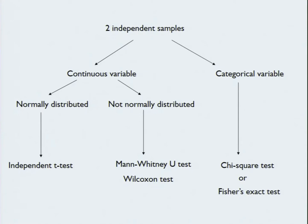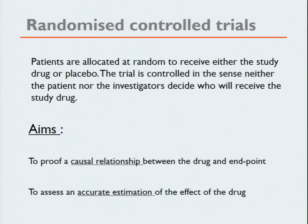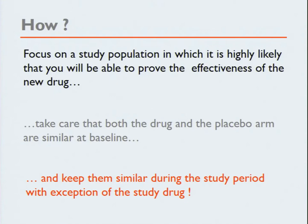Now we enter the study design, which I think is the most important part. The king — or queen — of trials is the randomized controlled trial. It is controlled in the sense that patients are allocated at random to receive either the study drug or placebo, and neither the patient nor the investigators decide who receives the study drug. The aim is to prove a causal relationship between the drug and the endpoints, and also to assess an accurate estimation of the effect. The key is to focus on a study population in which it is highly likely you will be able to prove effectiveness, take care that both arms are similar at baseline, and keep them similar during the study period except for the study drug.